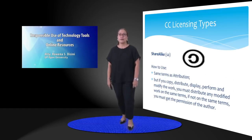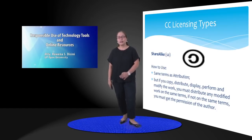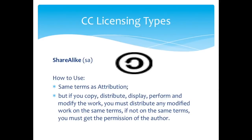The second license is the share alike license, indicated by the letters 'SA'. This license has the same terms as attribution with an additional element: it requires that if you copy, distribute, display, perform, and modify the work, you must distribute any modified work on the same terms — not more restrictive, but on the same terms. If not on the same terms, you must get the permission of the author before you can do anything with his work.